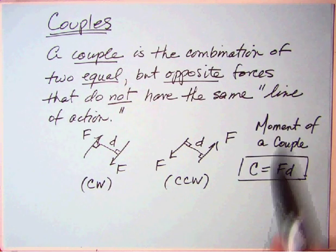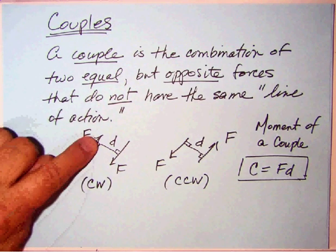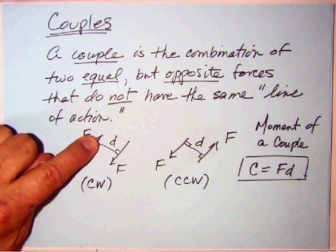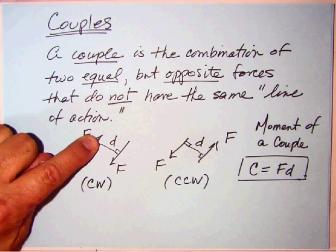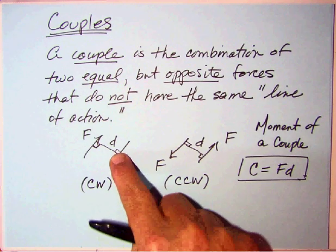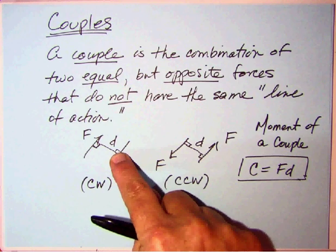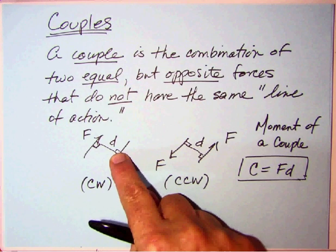And as I've added, the moment of a couple is labeled just C, C for couple. And it's either of the two forces times the perpendicular distance. It doesn't matter which one. If you held your finger here, you'd have F times D clockwise. If you held your finger here, you'd still have F times D clockwise. So it doesn't make any difference which one you pick.